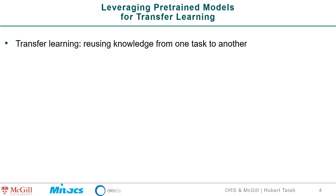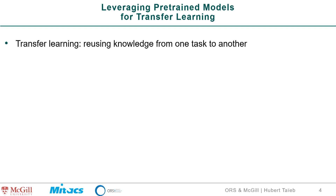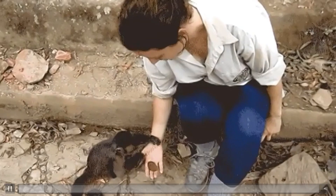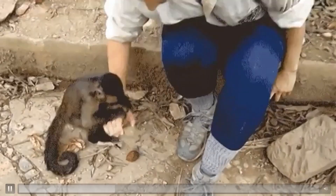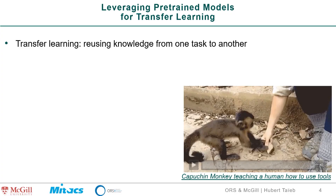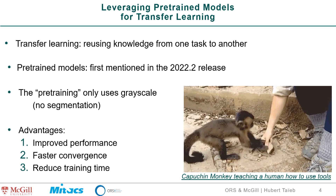Let's dive into the actual topic. Pre-trained models use something called transfer learning — when you take knowledge of something and apply it to something else. A good example is a monkey showing someone how to use a tool to open a nut. The thinking is: there is already knowledge about a specific task, and you can transfer that knowledge to someone else.